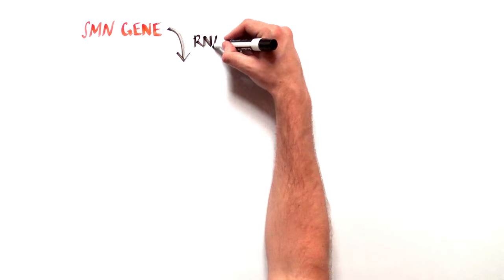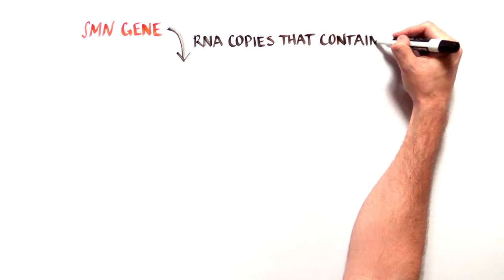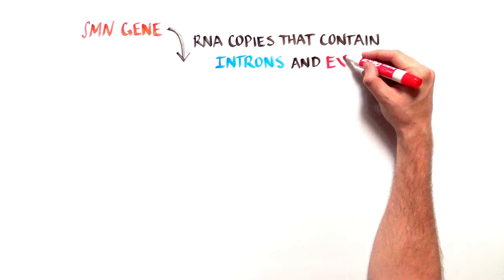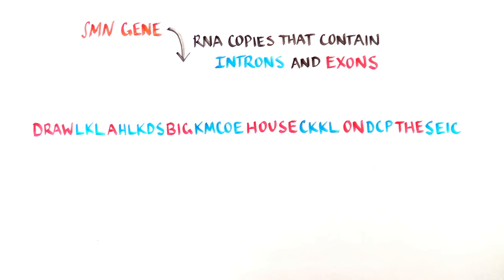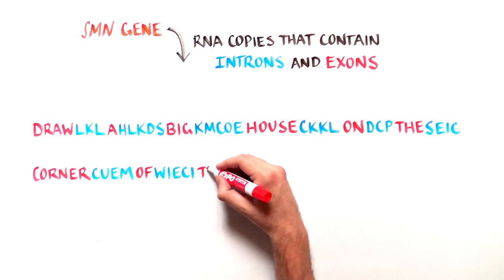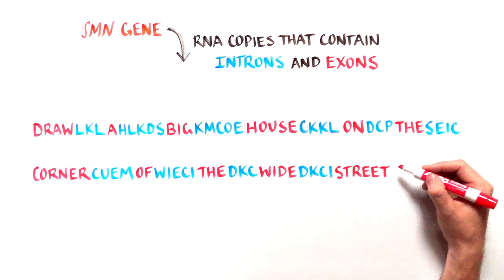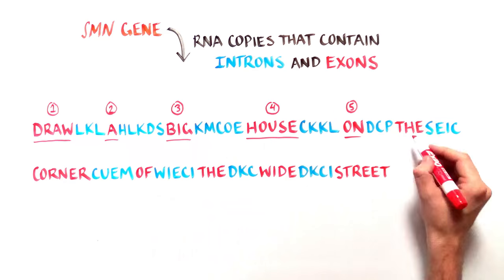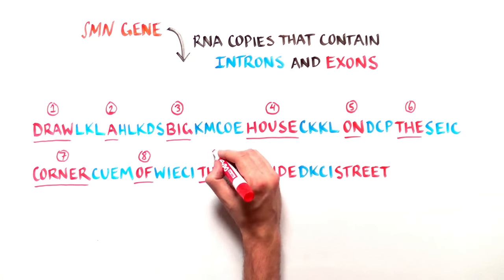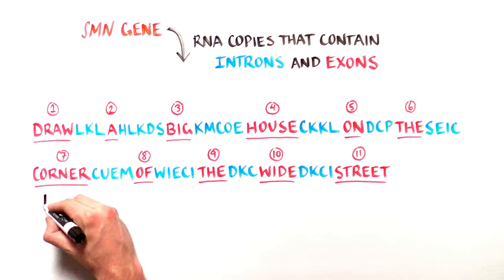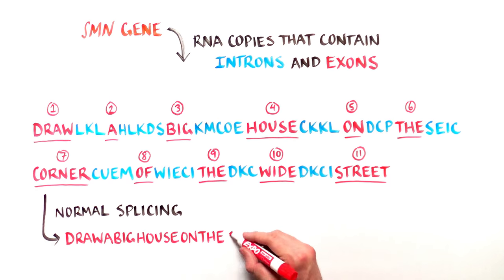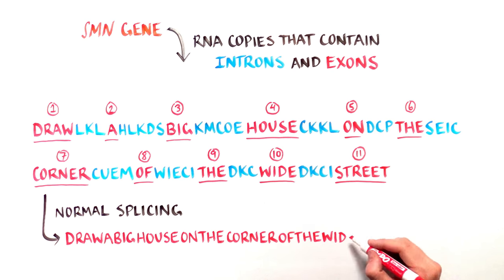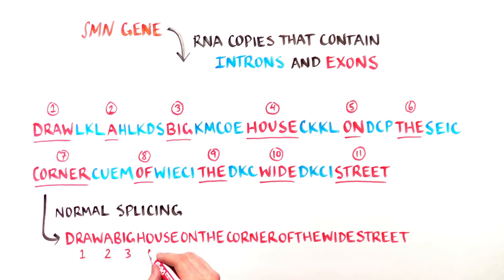Let's say the SMN gene generates RNA copies made up of introns and exons like this. Normal RNA splicing would delete the introns — the gibberish letters in blue — and leave only the exons, the red letters, generating the following message: draw a big house on the corner of the wide street.